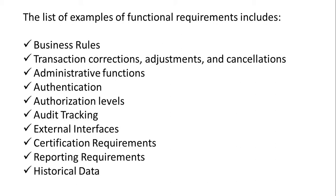Audit tracking. External interface — how the external interface should look, and what requirements have to be incorporated for the external part of the software. Certification requirement — if you develop any software related to an exam system where certification is required, then certification requirements will be informed to you by the client. Reporting requirements: the software must generate different kinds of reports. What reports are required and what varieties of reports — the client will inform the developer. So all these are categorized under the functional requirement.